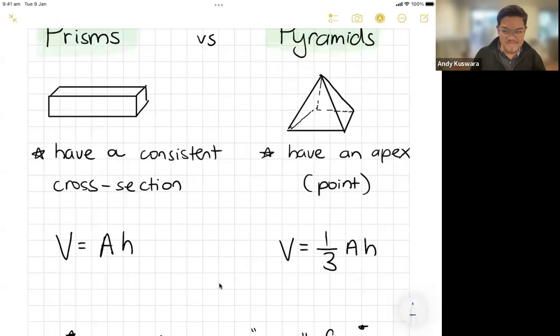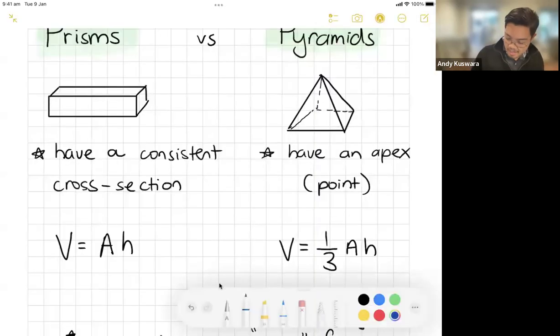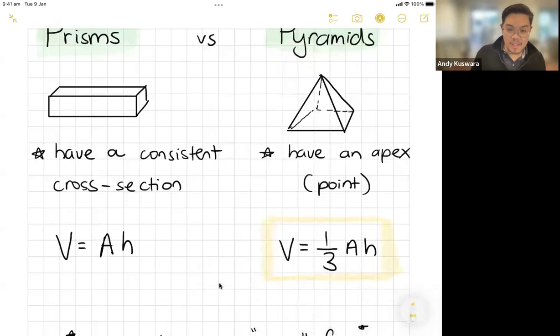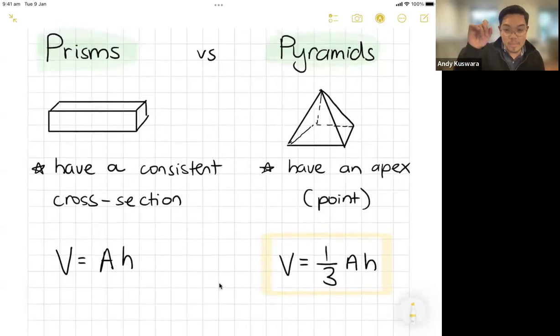The only formula that you're given is this guy here, V equals one-third Ah, and that one there is for pyramid, which just you have to remember has an apex—it has a point at the top. A prism will have a consistent cross-section all throughout.